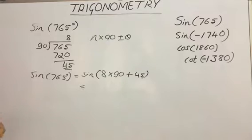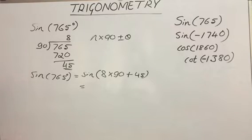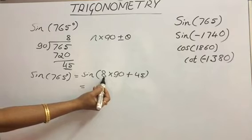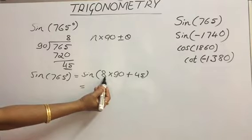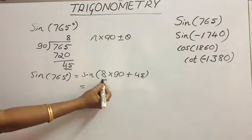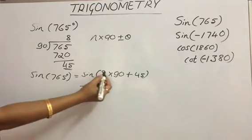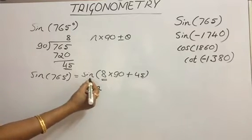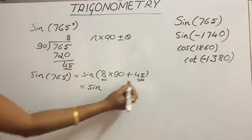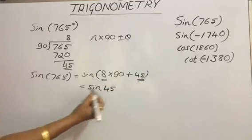Now let's apply the co-ratio rule. The co-ratio rule is: if n is even, the ratio will not change. If n is odd, then co-ratio applies. So now n is even, that is 8, so the ratio will not change. The answer will be sine of the remainder, that is sine 45°.